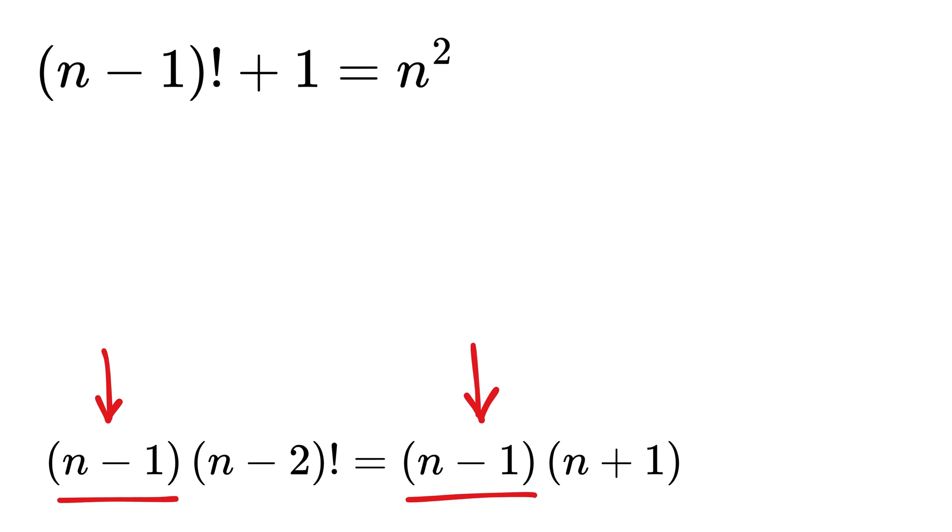Noice! Oh, look, n minus 1 will also get cancelled out from both sides, and we will be left with n minus 2 factorial equals n plus 1.